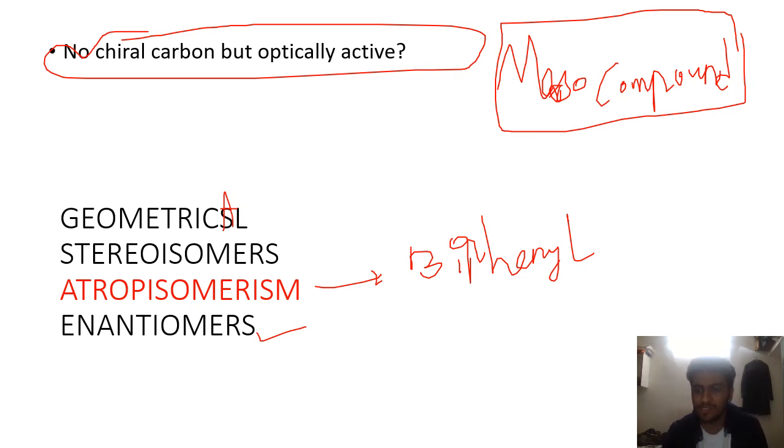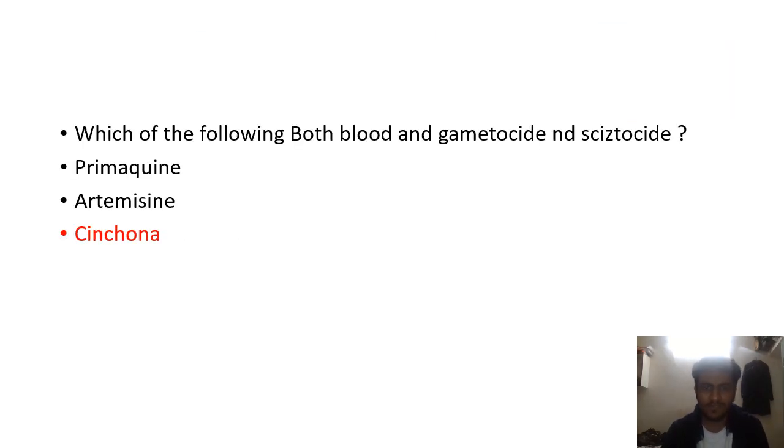Next, which of the following has both gametocidal and schizontocidal activity. Schizontocidal can be tissue schizontocidal or blood schizontocidal. Artemisinin is obtained from Artemisia annua, and artemether, arteether are different analogs and derivatives.